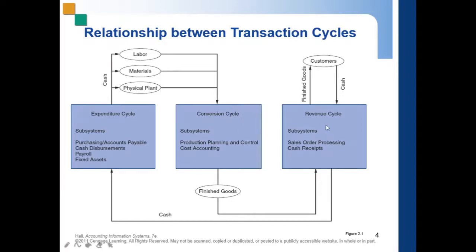When cash is received, it can be used again for expenditures, completing the cycle. This is the overview and the relationship between the expenditure, conversion, and revenue cycles in the transaction cycles. The revenue cycle will be discussed in Chapter 4.